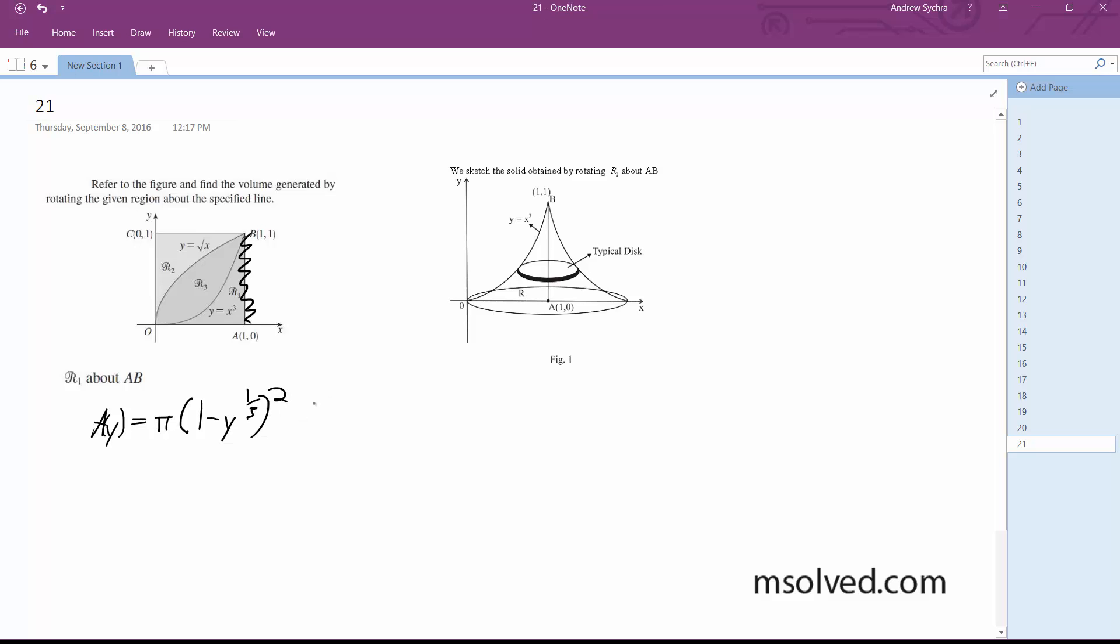And after we multiply this out, we get π(y^(2/3) - 2y^(1/3)).